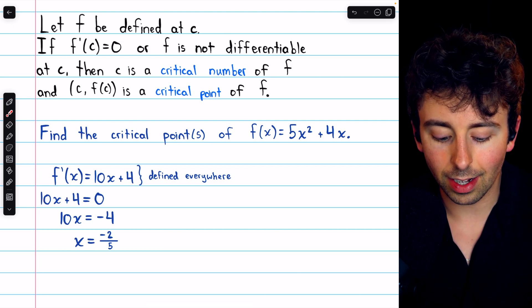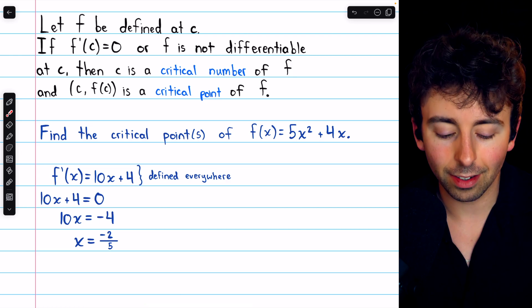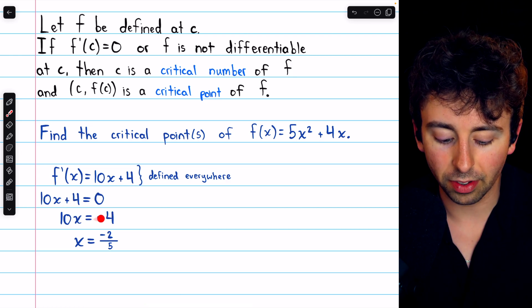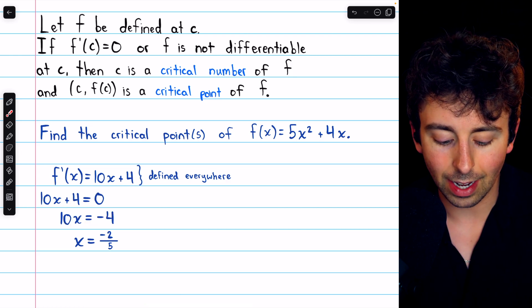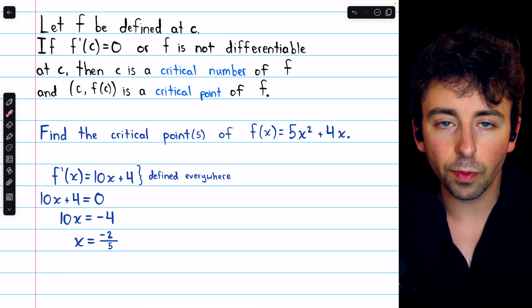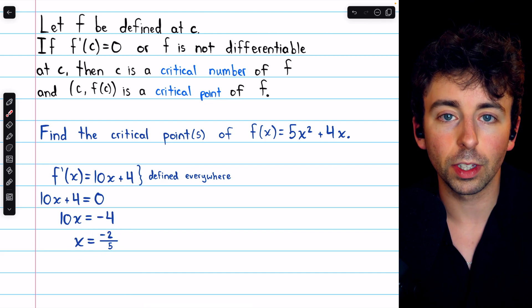So we take the derivative, set it equal to 0, and solve for x. We can subtract 4 from both sides, then divide both sides by 10 and simplify, and we get negative two-fifths as our one critical number.